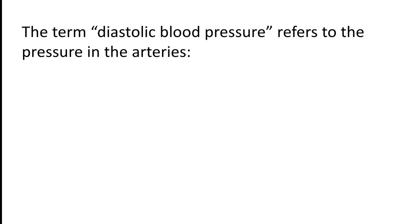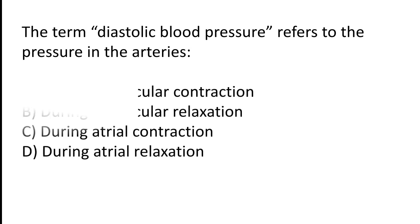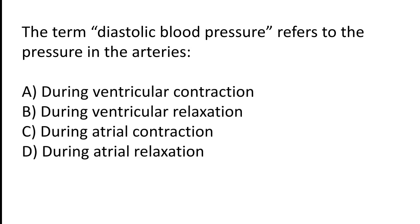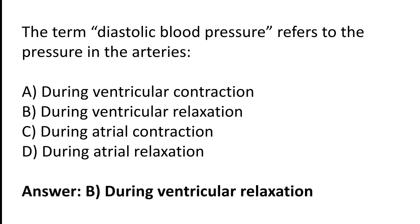The term diastolic blood pressure refers to the pressure in the arteries: During ventricular contraction, during ventricular relaxation, during arterial contraction, or during arterial relaxation. The correct answer is option B. Diastolic blood pressure refers to the pressure in the arteries during ventricular relaxation.